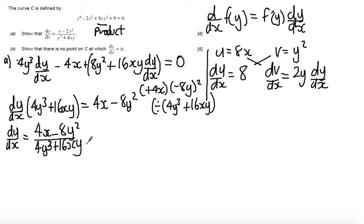Now, in a mark scheme, it generally says that when you're trying to show a result, it has to be convincing, so at this point what I do just to be convincing is I would factorise top and bottom, because there's a common factor of 4 on this top term, so I get 4 times x minus 2y squared. I would factorise the bottom, there's a common factor of 4 there as well, so I get left with y cubed plus 4xy.